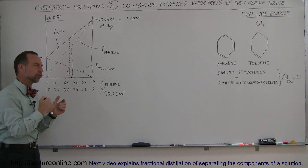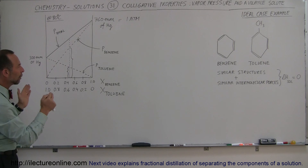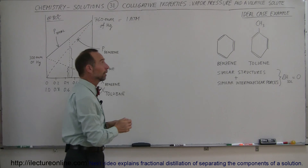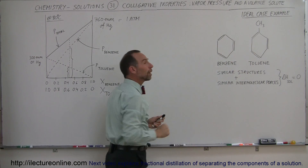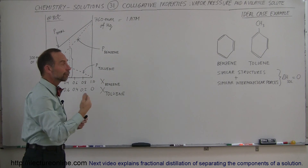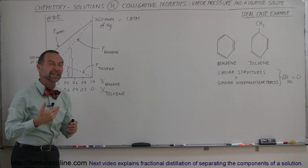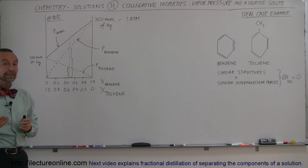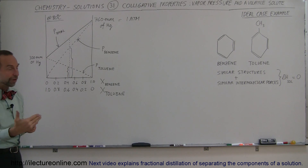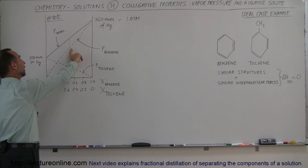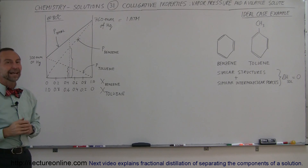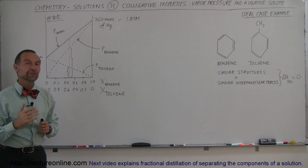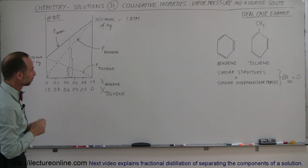In the next video, I will show you how to do fractional distillation. But here we wanted to show the ideal case example, where molecules are very similar in structure and intermolecular forces, and how you calculate the total vapor pressure as a sum of the individual contributions. That's the example of vapor pressure and volatile solute. Thank you.